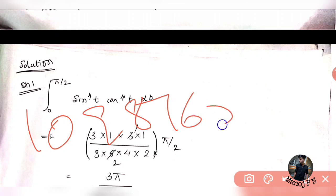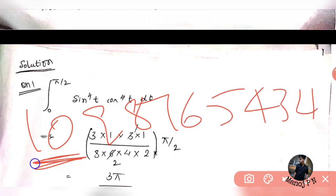Even upcomings — I am going to consider 10 itself is going to be one of the numbers. Out of the series, 10 is also an even number: 8, 6, 4, 2 — these are called even upcomings. Guys, odd upcomings, even upcomings.